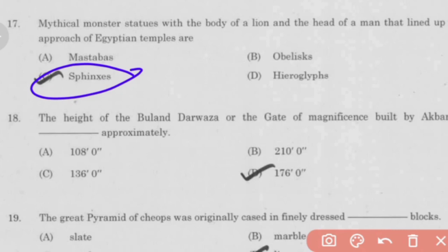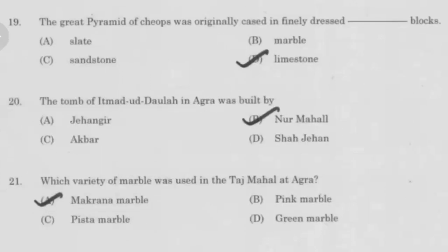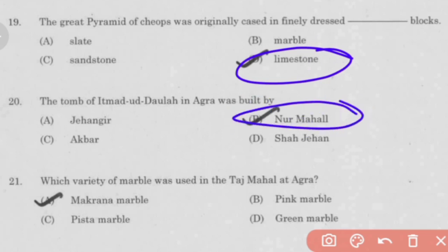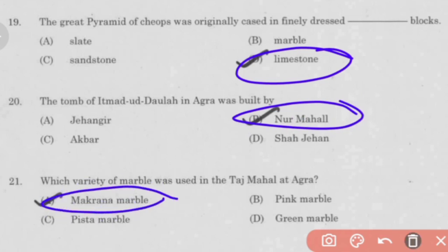The Great Pyramid of Khufu was originally cased in finely dressed limestone blocks. The tomb of Itmad-ud-Daulah in Agra was built by Nur Mahal. The variety of marble used in the Taj Mahal at Agra is Makrana marble.